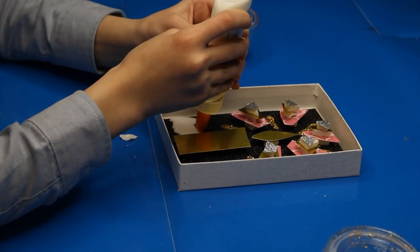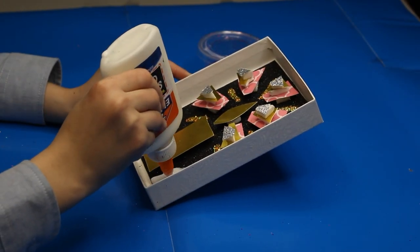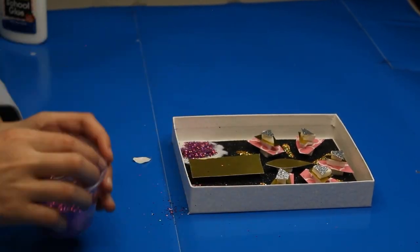Use the glue again to make a design on the base of the candle. I decided to make drips. With the other color of glitter, do the same you did with the lines.